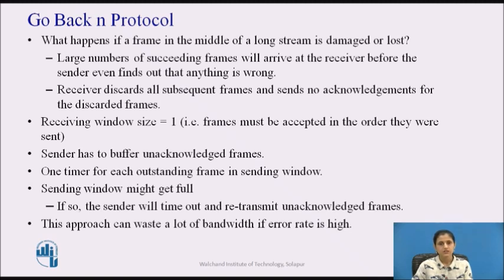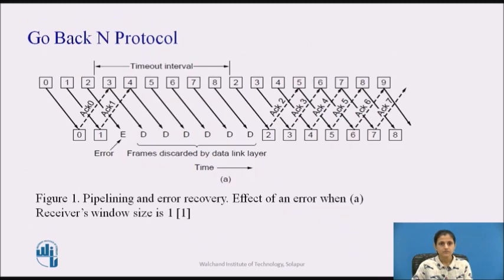This approach can waste a lot of bandwidth if the error rate is high. In figure 1a, we see the go-back-N protocol for the case in which the receiver's window size is 1. Frames 0 and 1 are correctly received and acknowledged. Frame 2 is damaged or lost. The sender is unaware of this and continues sending frames until the timer for frame 2 expires. Then it backs up to frame 2 and starts over, sending frames 2, 3, 4, etc. all over again.